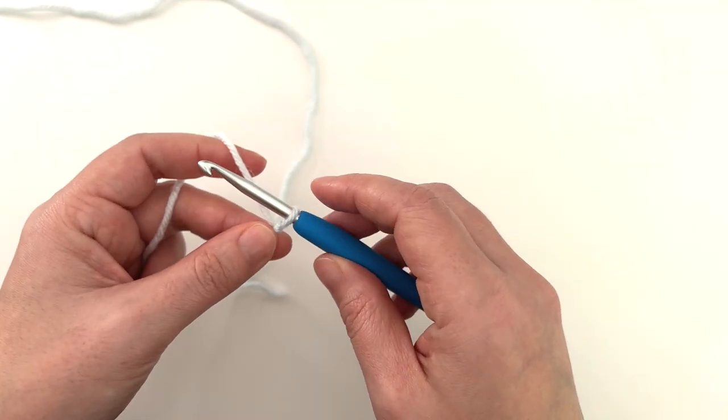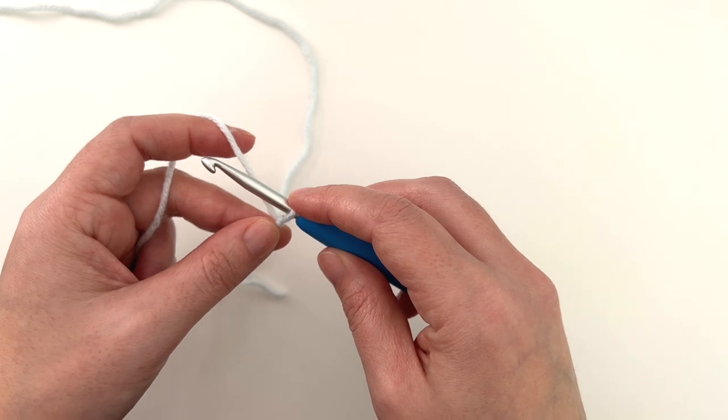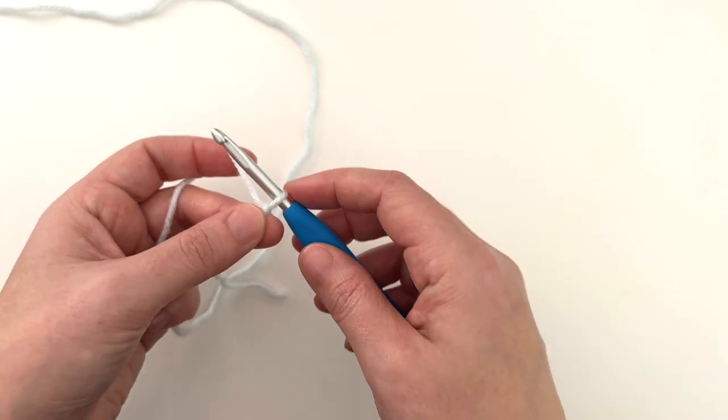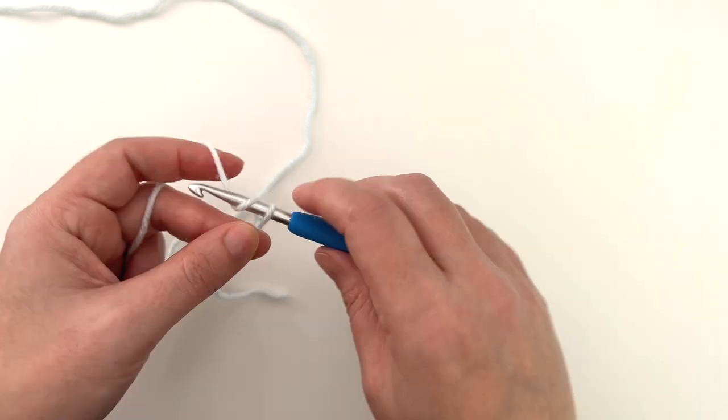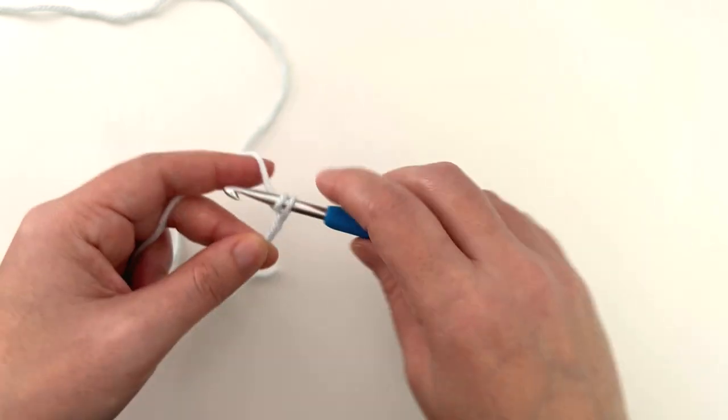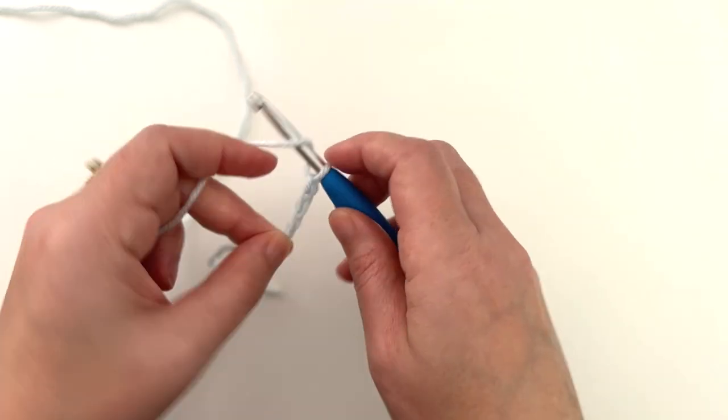So for this one we're going to begin by chaining any multiple of eight stitches. So if you'd like to follow along I'm going to chain 24. You can pause the video and then I will meet you at the end.